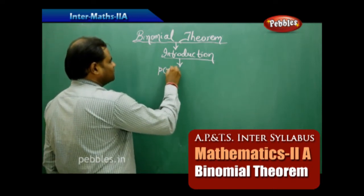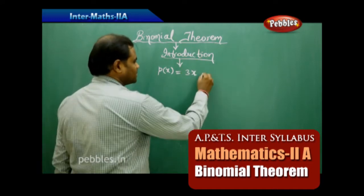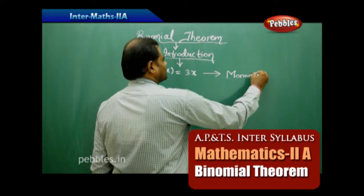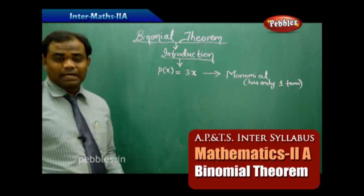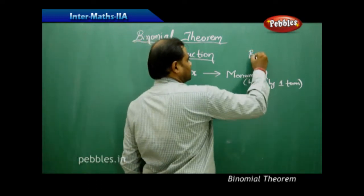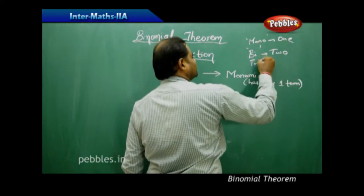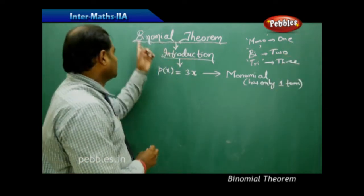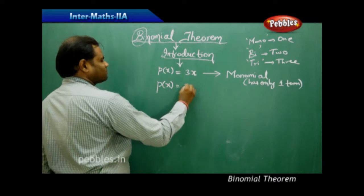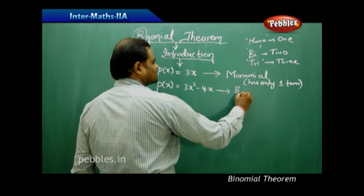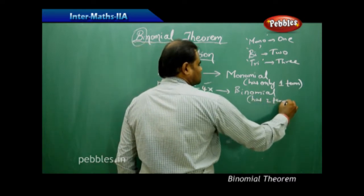Suppose I have a polynomial function which has only one term — for example, 3x. Such a polynomial is called a monomial because it has only one term. The word mono refers to 1. Now if a polynomial has two terms it is called a binomial because bi refers to 2. For example, p(x) = 3x² − 4x is a binomial because it has two terms.